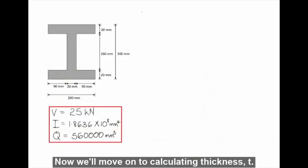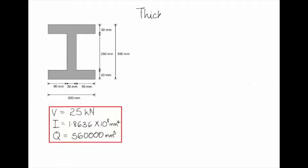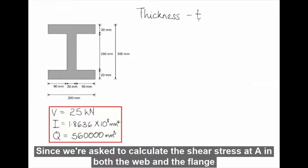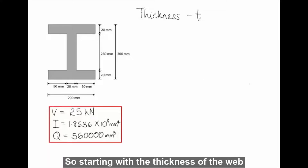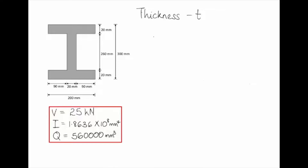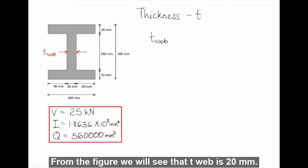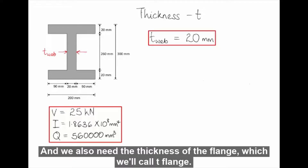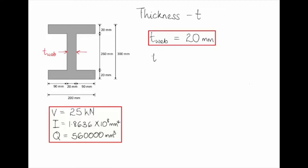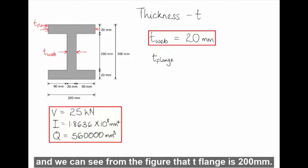Now we'll move on to calculating thickness t. Since we're asked to calculate the shear stress at A in both the web and the flange, we need the thickness of each. From the figure, t-web is 20 millimeters, and t-flange is 200 millimeters.